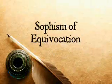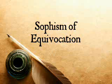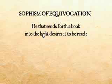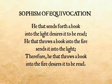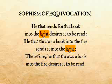Perhaps the largest and most extensive kind of fallacy is the sophism of equivocation. It is the abuse of the ambiguity of words, making them appear equal when they are not. One obvious example is: he that sends forth a book into the light desires it to be read; he that throws a book into the fire sends it into the light; therefore, he that throws a book into the fire desires it to be read. This sophism is resolved by showing the different senses of the words, terms, or phrases. Here, 'light' in the major proposition signifies the public view of the world, and in the minor it signifies the brightness of flame and fire. Therefore, the syllogism has four terms — or rather it has no middle term — and it proves nothing. There is no connection even though the terms are the same.